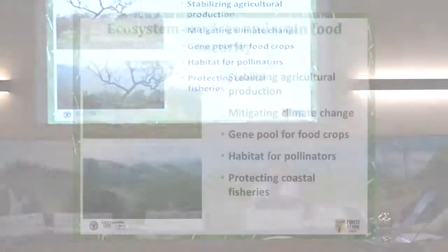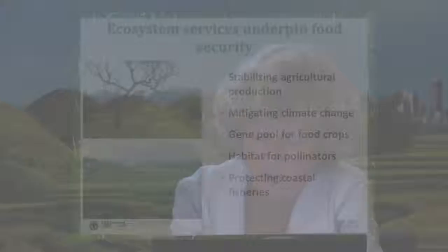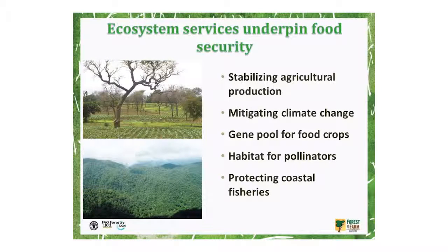The ecosystem services provided by forests underpin food security because they support and stabilize sustainable agricultural production. Forests protect water and soil resources, assist with soil development and fertility, regulate climate, and provide habitat for wild pollinators and the predators of agricultural pests. They are also storehouses of biodiversity — about 80% of terrestrial biodiversity is found in forests.